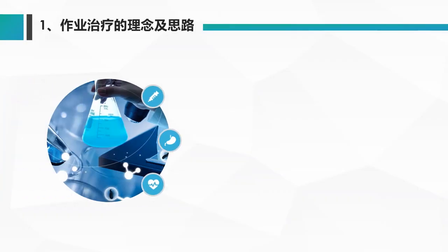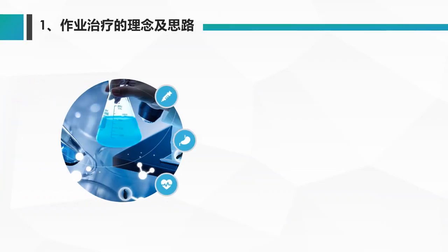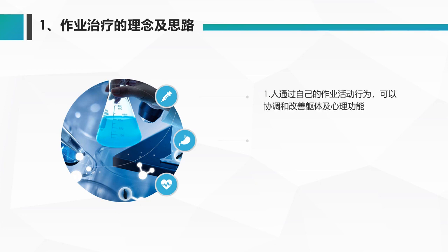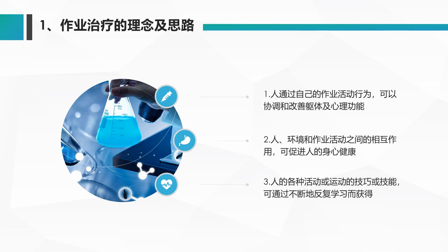第三节，作业治疗的基本理论。作业治疗的理论和思路主要从三个方面来实现：第一，通过自己的作业活动来协调、改善躯体和心理的一些功能；第二，通过人、环境、作业活动之间的相互作用，来促进人的身心健康；第三，人的各种活动和运动的技巧和技能，通过不同的反复学习而获得功能。